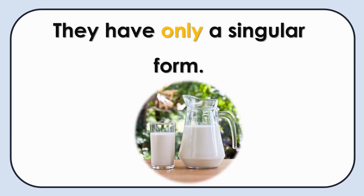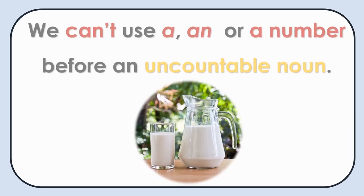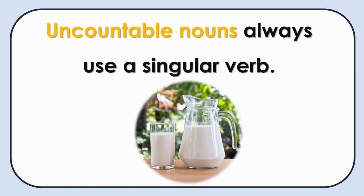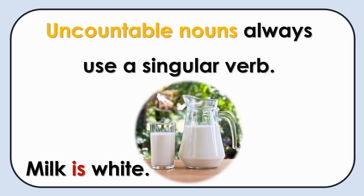Uncountable nouns have only a singular form. We can't use a, an, or a number before an uncountable noun. Uncountable nouns always use a singular verb. Milk is white — milk is uncountable, so we must use a singular verb.